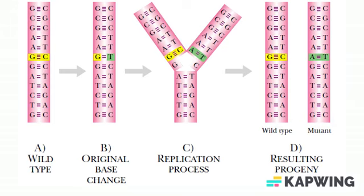This process is sometimes referred to as segregation, as the originally mutated cell segregates the mutation and the wild-type into separate daughter cells upon cell division.